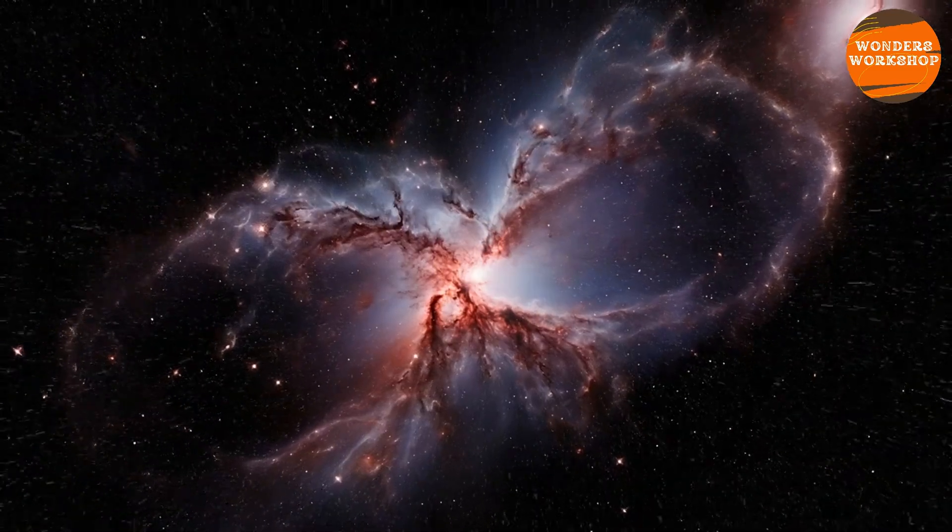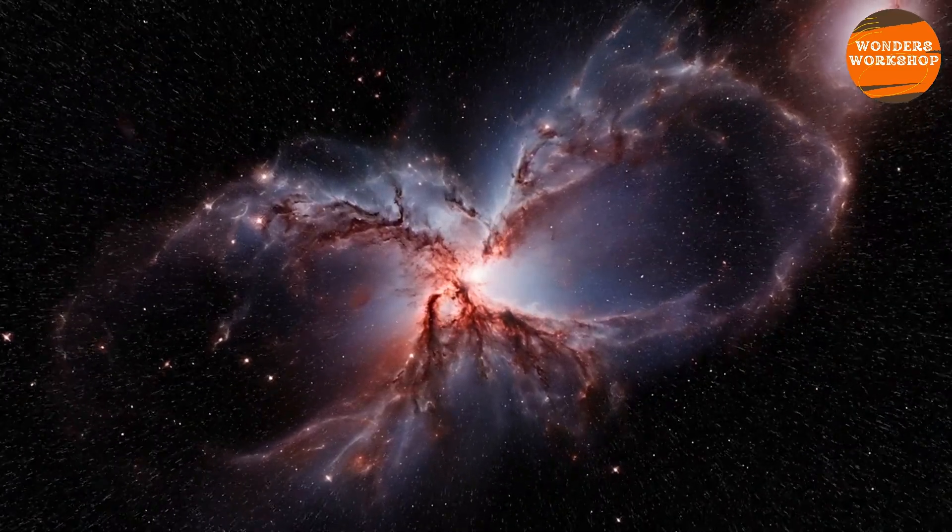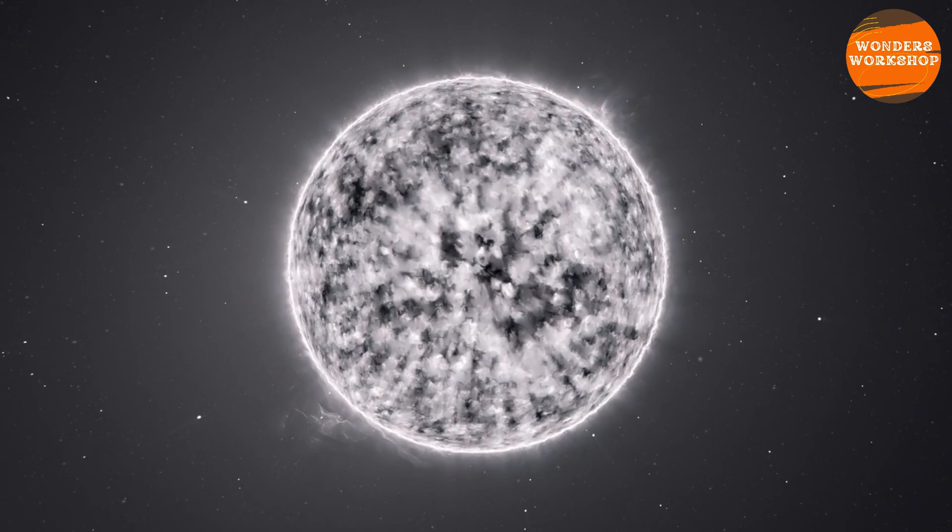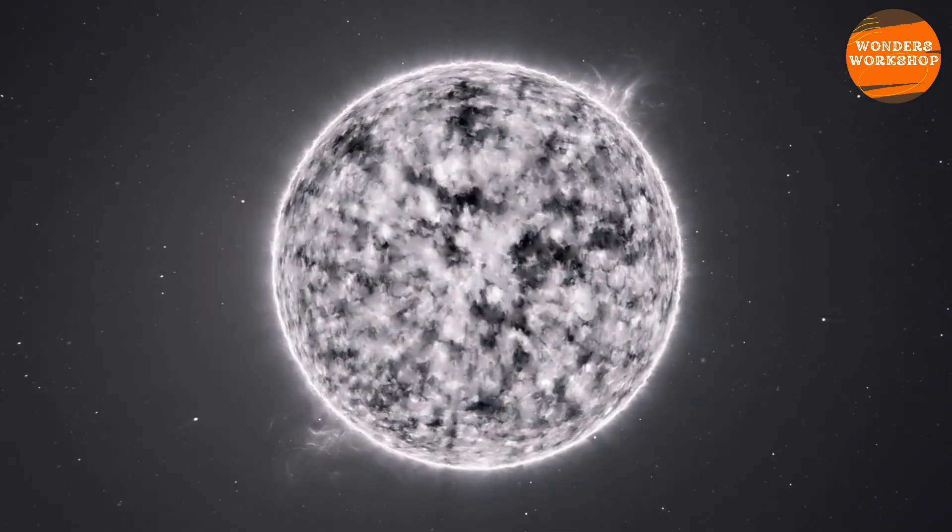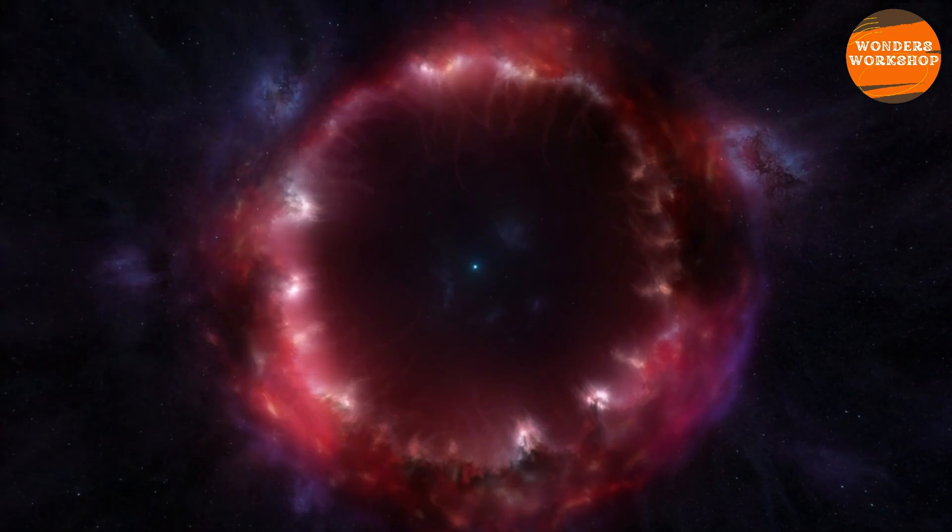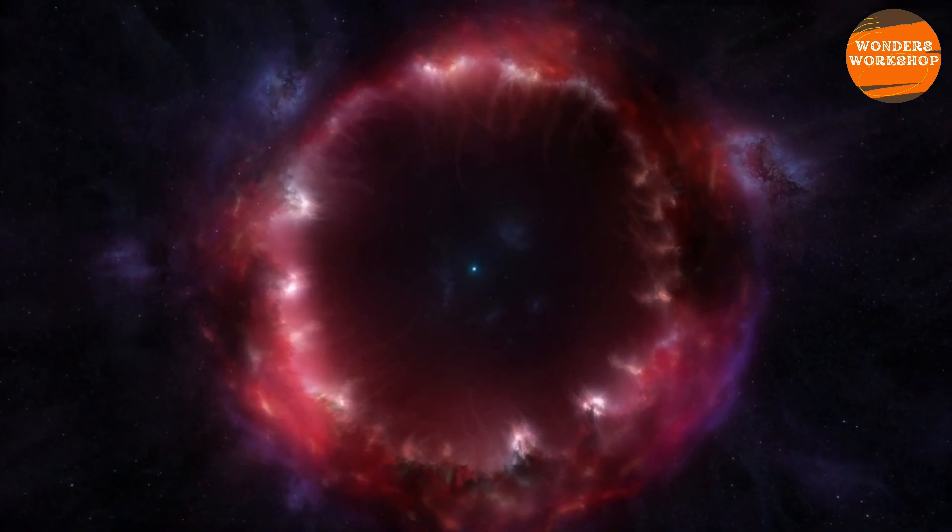Now let's move on to the second type of supernovae, those that form as a result of the evolution of a binary system. The starting point is a white dwarf, what remains after a medium-large mass star has stopped fusing material within it. The white dwarf accretes material from its companion, a red giant.